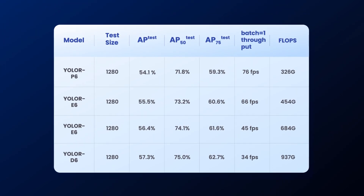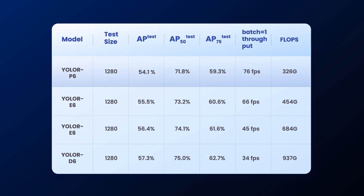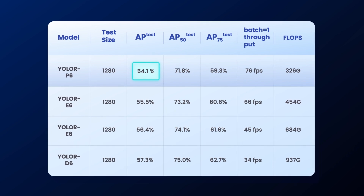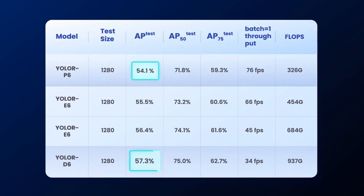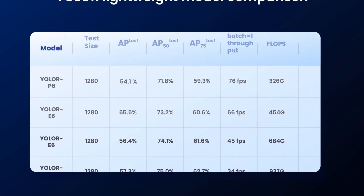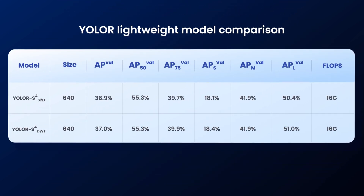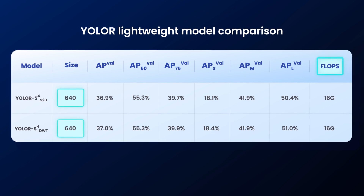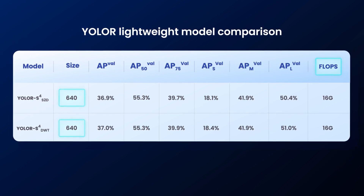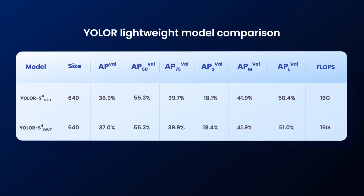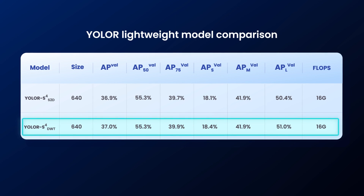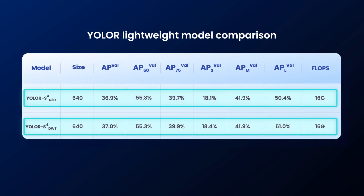On the COCO test set, the YOLO-R P6 variant achieves an average precision score of 54.1%, while the largest model, D6, achieves a spectacular 57.3%. YOLO-R also provides two additional lightweight variants trained on 640 image size, designed for resource-constrained environments with FLOPs 18 times smaller than P6. Both lightweight models are similar in architecture except for the stem — one uses discrete wavelet transform, and the other uses spatial-to-depth reorganization of pixels.